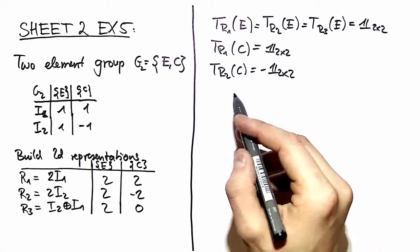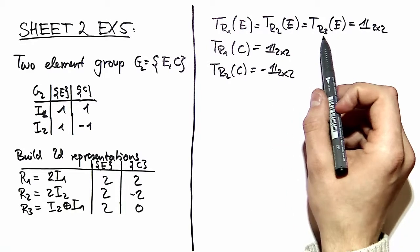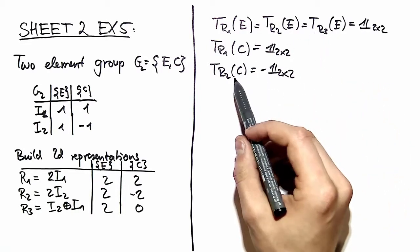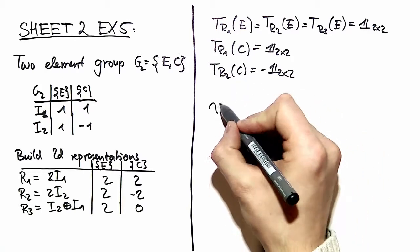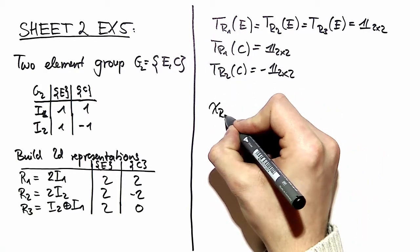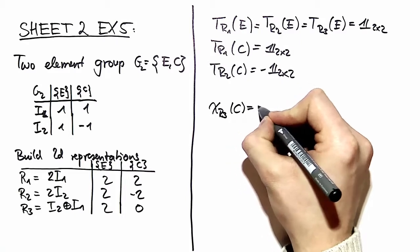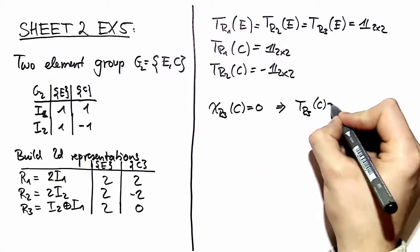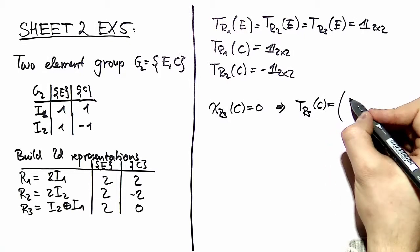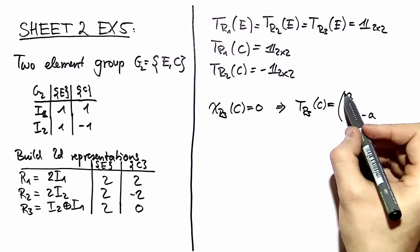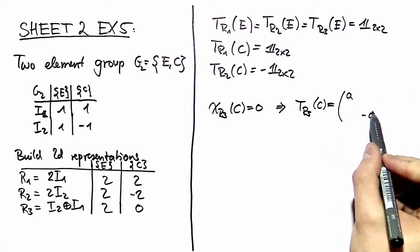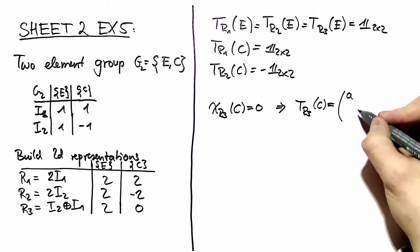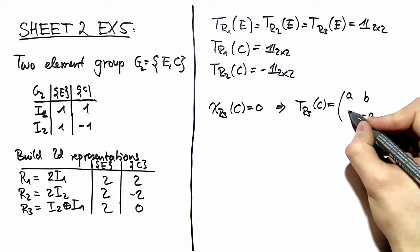We want to see what is the matrix representation in R3 of our element C. First of all, we use that the character of that element is 0. Therefore, our matrix representation can only take this kind of form: we have two variables, A and minus A. This is because the character has to be 0, and the character is the trace. And then we have B and C.